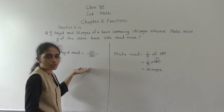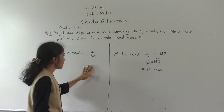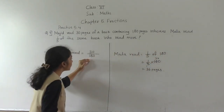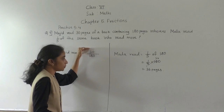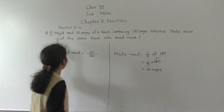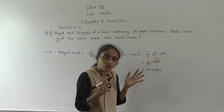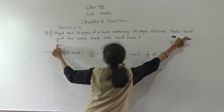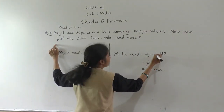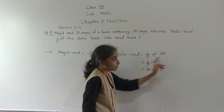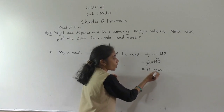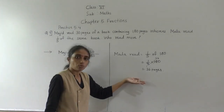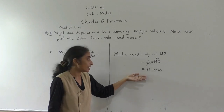Majid read 30 pages from 180 pages. And Mala read 1 fifth of the same book — 1 fifth of 180 = 36 pages. So who read more pages? Mala read more pages.